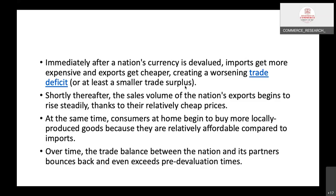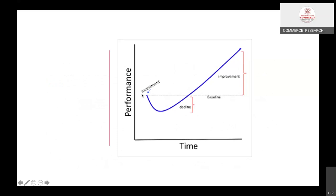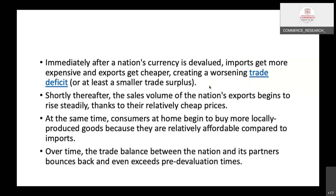So exporters feel they are getting more money and want to export more. Imports, on the other hand, become costly. But it will take time because all exporters and importers will have to maintain existing contracts. So it will take some time to get the benefit of this devaluation — that time is represented here on the curve. After that lag period, there is a sudden increase in trade and the country's balance of payment position improves. This is called the J-Curve effect.